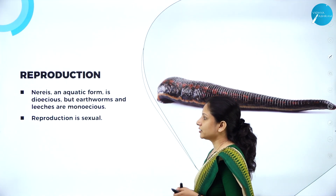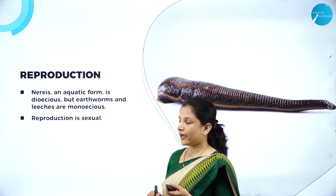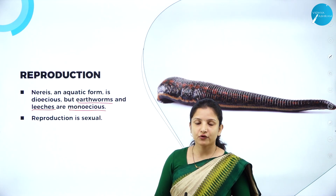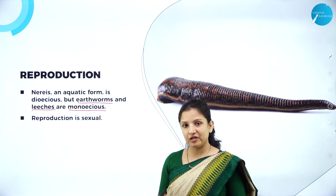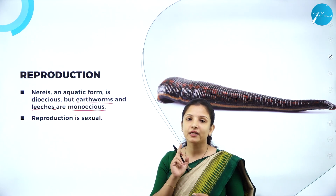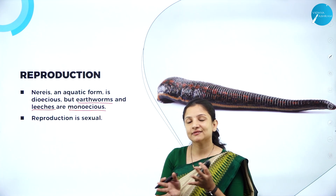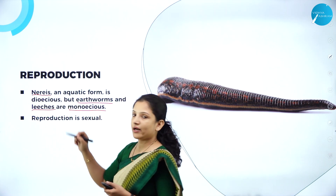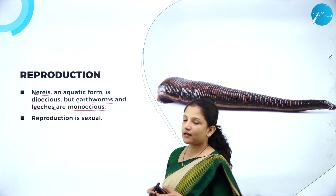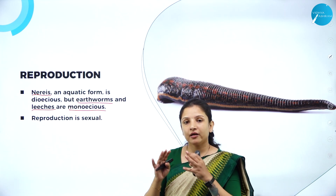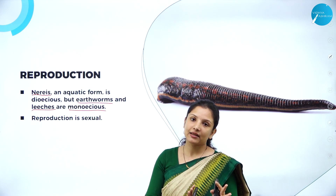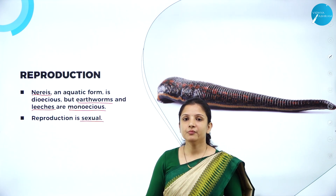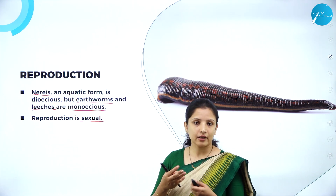Reproduction: in earthworms and leeches, they are monoecious — meaning they are hermaphrodites, wherein both male and female reproductive organs are present in one individual organism. They don't have separate males and females. Whereas Nereis, which is an aquatic annelid, is dioecious — meaning male Nereis and female Nereis are separate. Reproduction is sexual, so the sperm and egg meet for fertilization and the young ones develop.